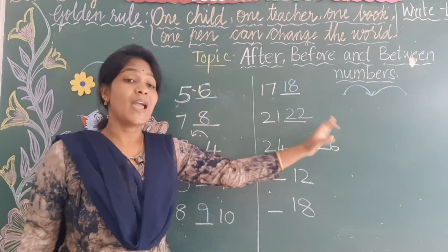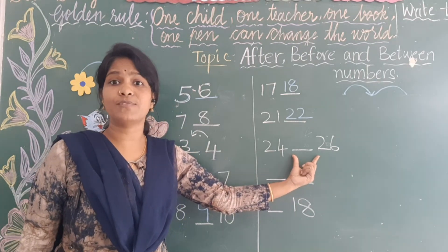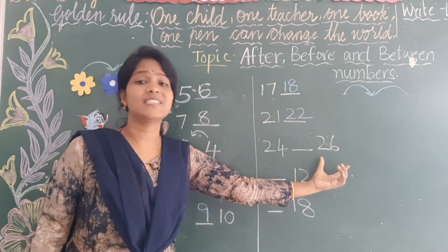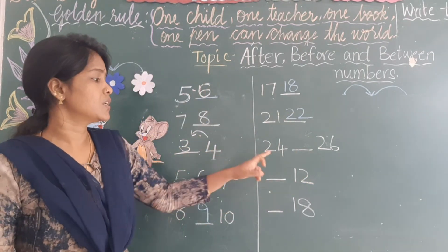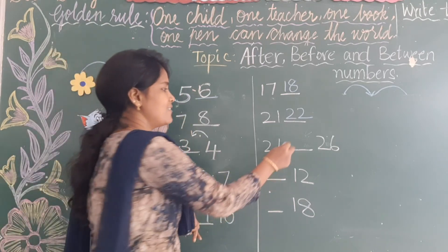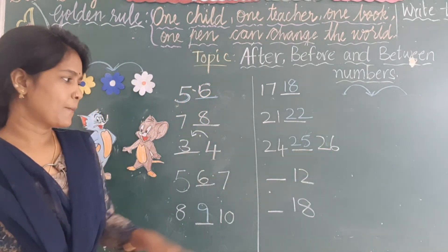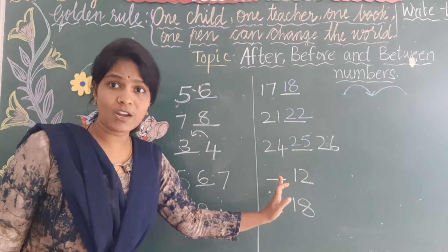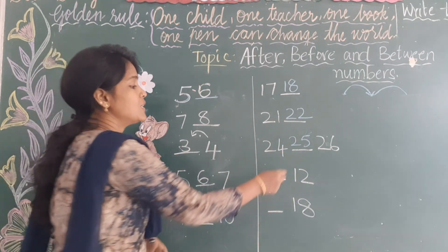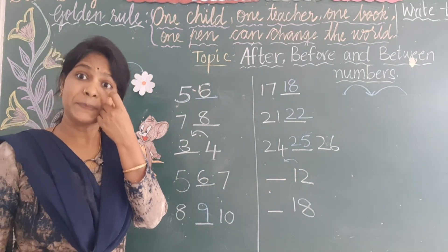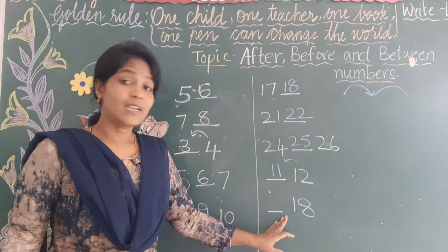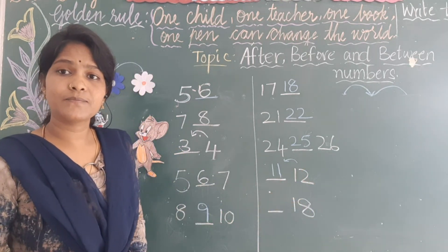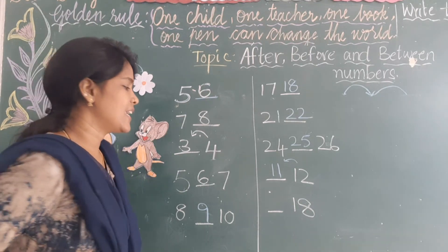Here we have 24 and on the other side 26 — in between, one number is missing. What is that number? 24, 25, 26 — so in between 24 and 26 there is 25. And here we have a blank and after the blank we have number 12 — we have to find out the before number. What is the before number of 12? 11 — very good. Here we have a blank and after the blank we have number 18 — what comes before 18? Yes, 17.